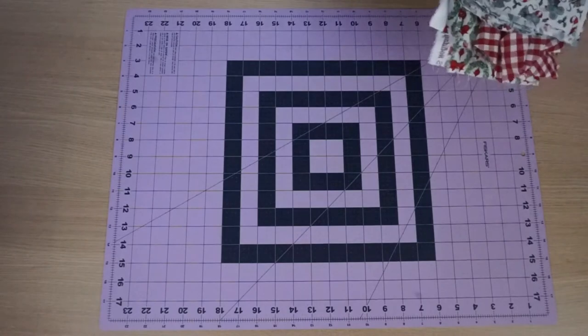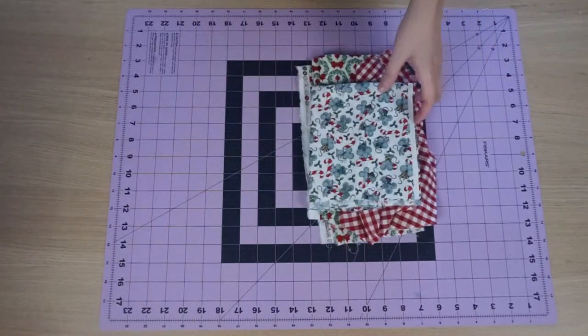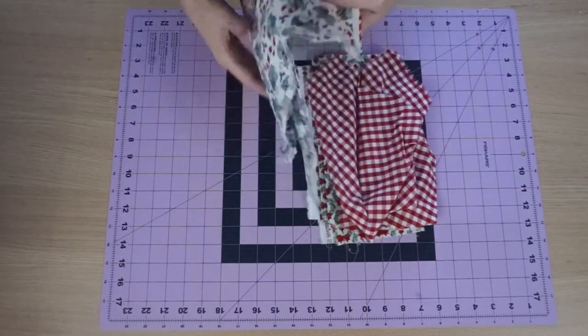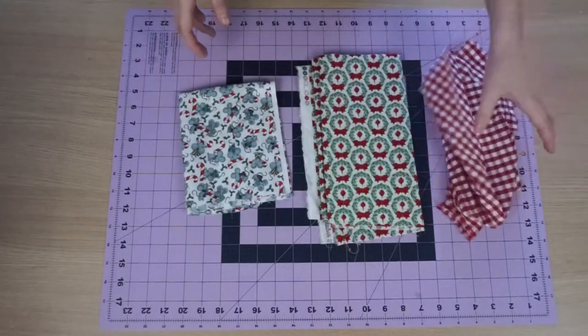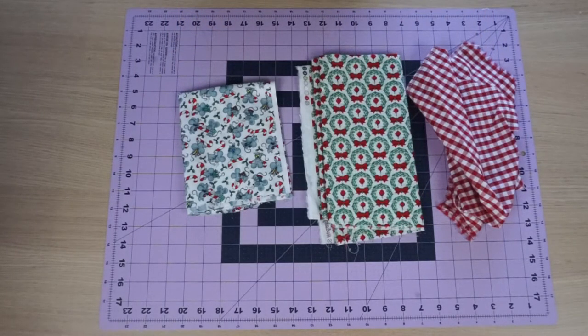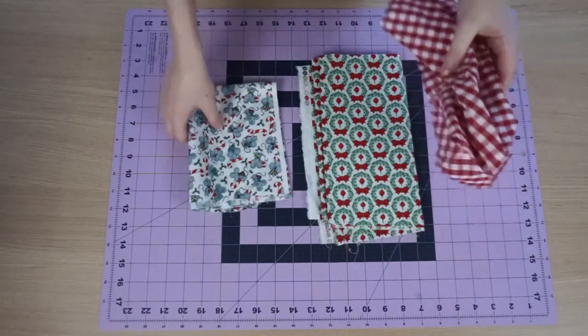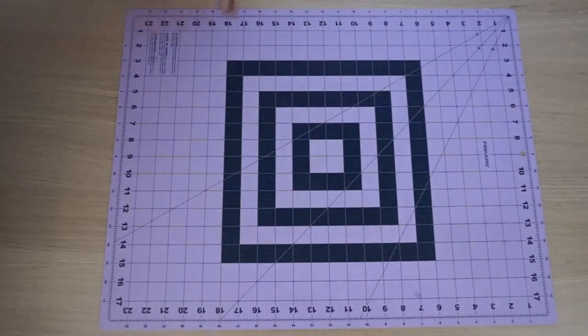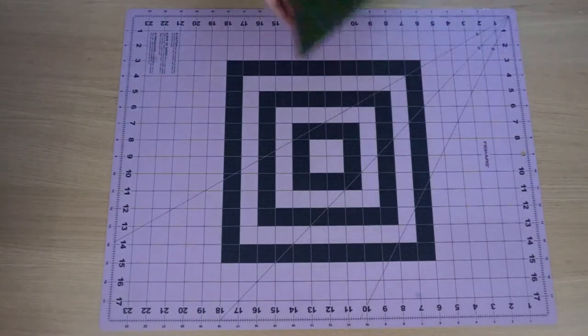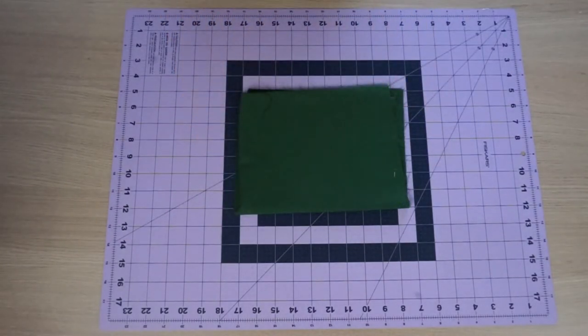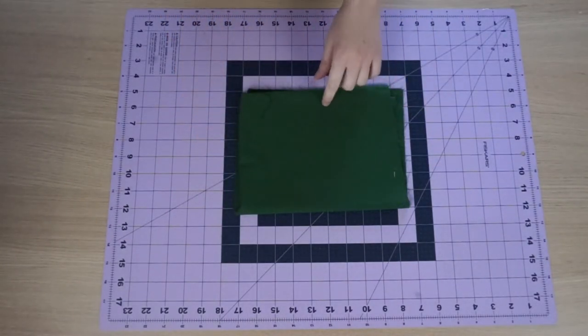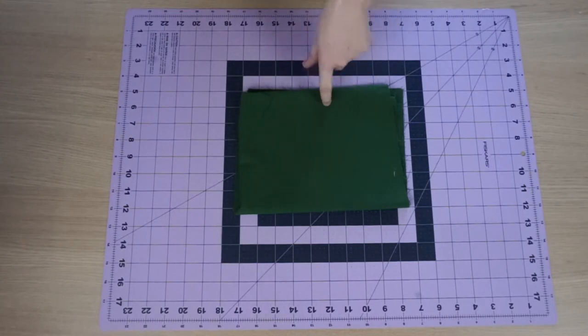You will also need an assortment of fabric. Here, I'm just using some scraps that I have from Christmas stockings that I've made over the last couple of years. If you don't have scraps, I would say you would probably need about a quarter of a yard per fabric that you want to use for your stocking. That should be enough to get you what you need. And then you're also going to need fabric for your lining and for your cuff. So I'm just going to use this plain green fabric. This is also a leftover from previous stockings that I've made in the past.